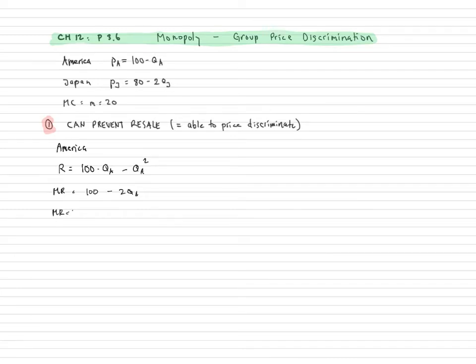That's going to be 100 minus 2QA. I'm going to set the marginal revenue equal to marginal cost. So that's going to be 100 minus 2QA equals 20. And therefore, the quantity that the monopoly will sell in America is going to be equal to 40. The price they will charge in America is going to be equal to 60. And the profit they will make in America is going to be equal to 60 minus 20 times 40, which is equal to 1,600.